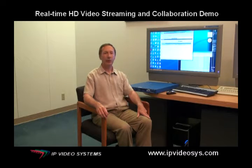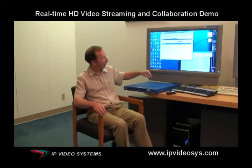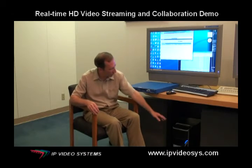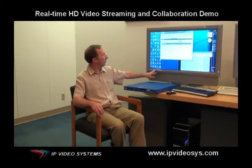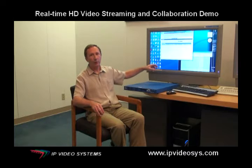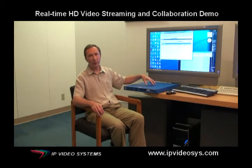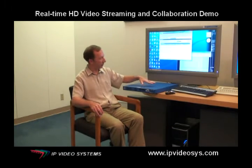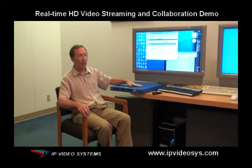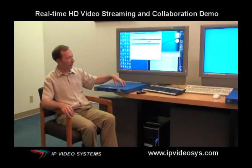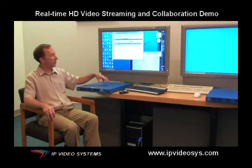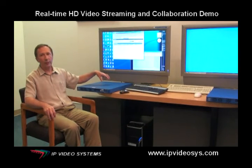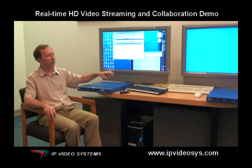The setup you are seeing here on the left side is a computer on the bottom, which is driving this screen over here, and we also connect that output of the computer to our transmitter — the blue box over here. This encoder will encode the data and transmit it over the IP network to the remote side.